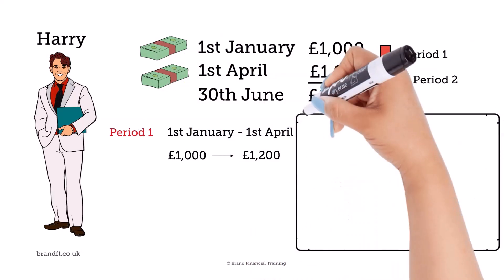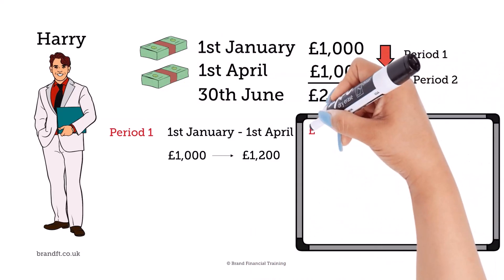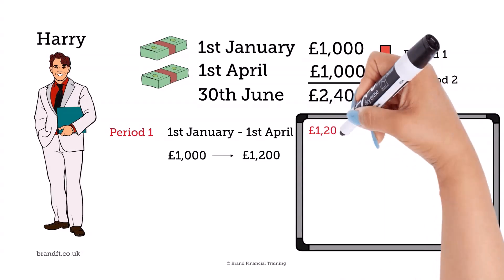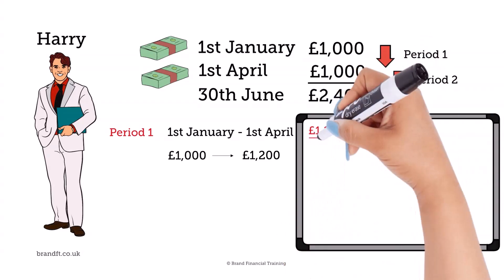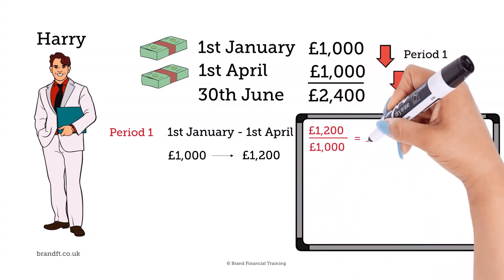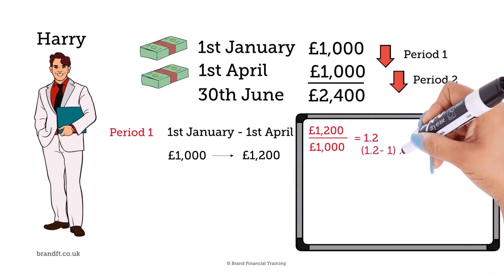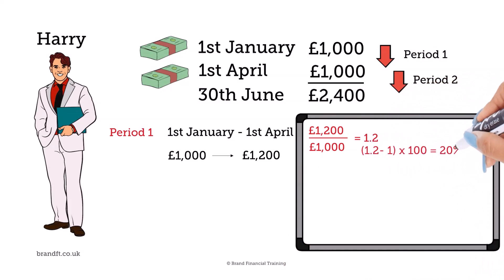To work out what that is as a percentage, we take the end value of £1,200 and divide it by the starting point of £1,000. This gives us a figure of 1.2. Deduct the 1, then multiply by 100 to give us the percentage figure, which in this case is 20%.